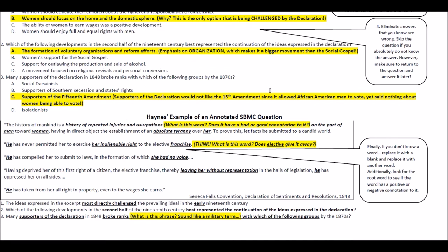Personally, I like to annotate my stimulus questions — I like to mark them up and underline words I think are important. For example, 'a history of repeated injuries' and 'usurpations.' Think about whether that word has a good or bad connotation. If you're not sure, draw a line through it or leave it blank, then come back and see if it makes sense when you reread the sentence: 'on the part of man towards woman.'